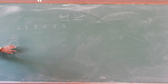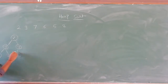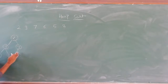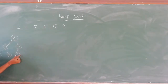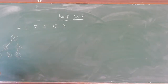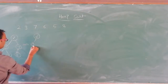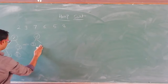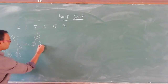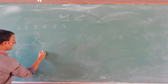Then we have to start heapifying it. We take the last node — only one child is there for 7, there is no other child. Whichever child is there, you compare it with its parent. So 8 is bigger than 7, we are going to swap it. So 8 comes up and 7 goes down.